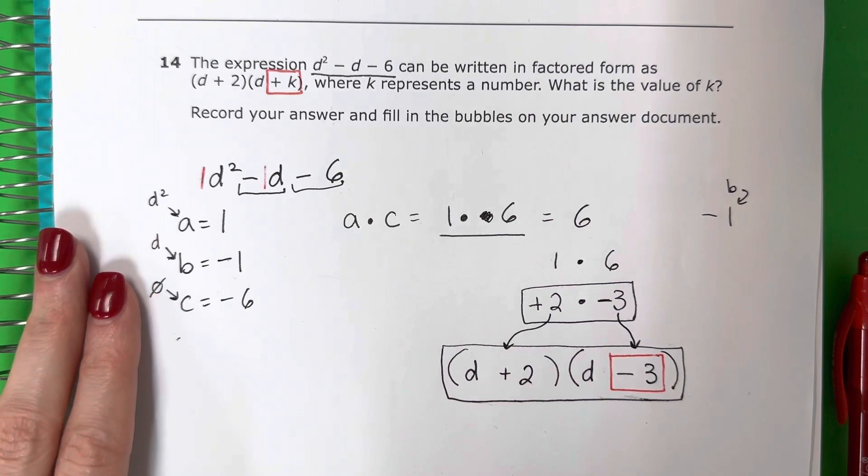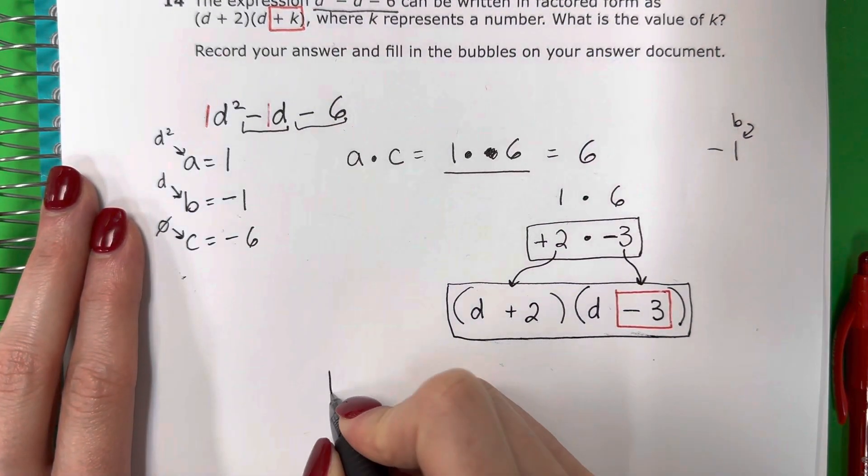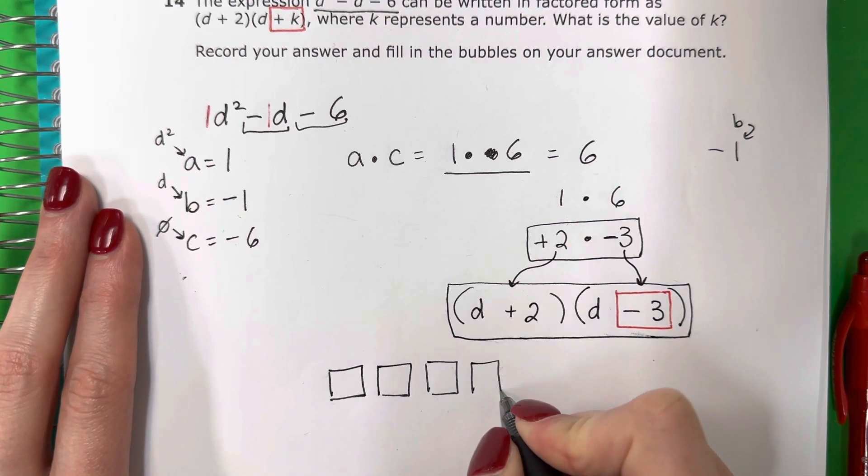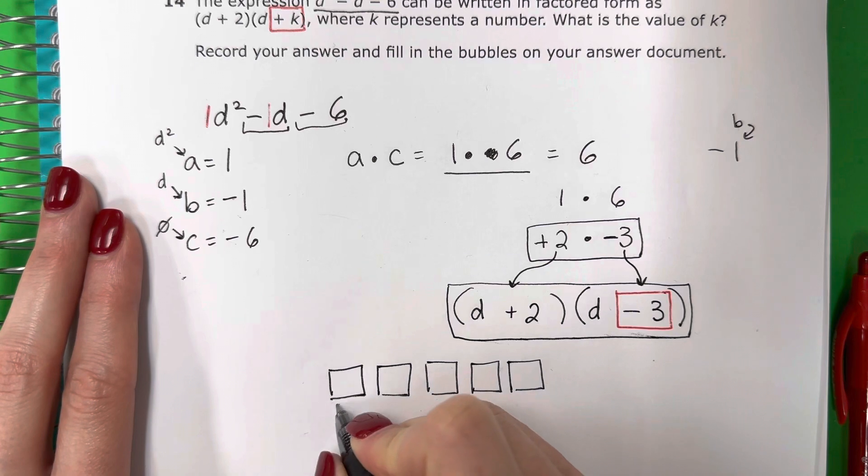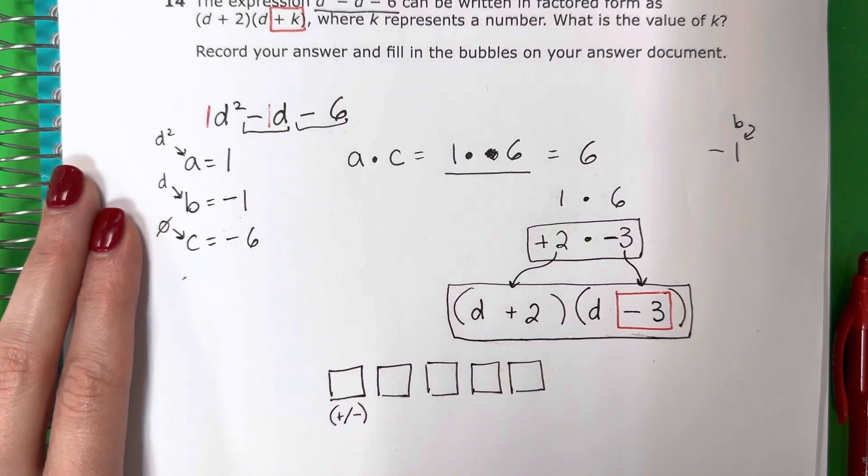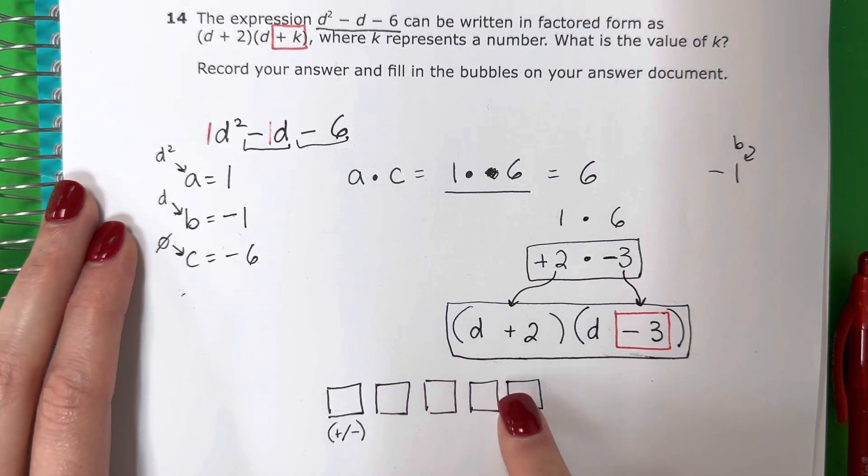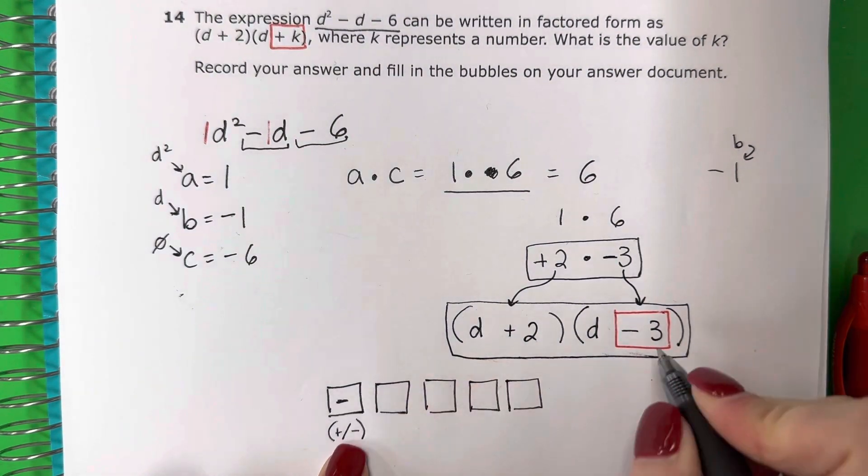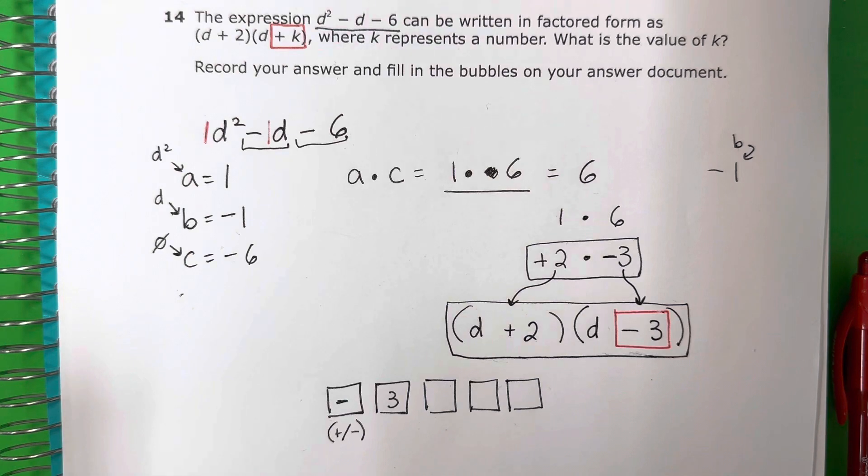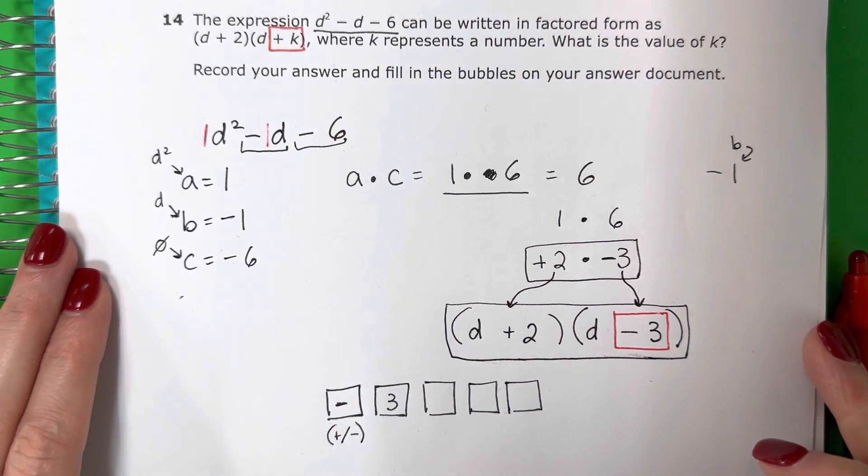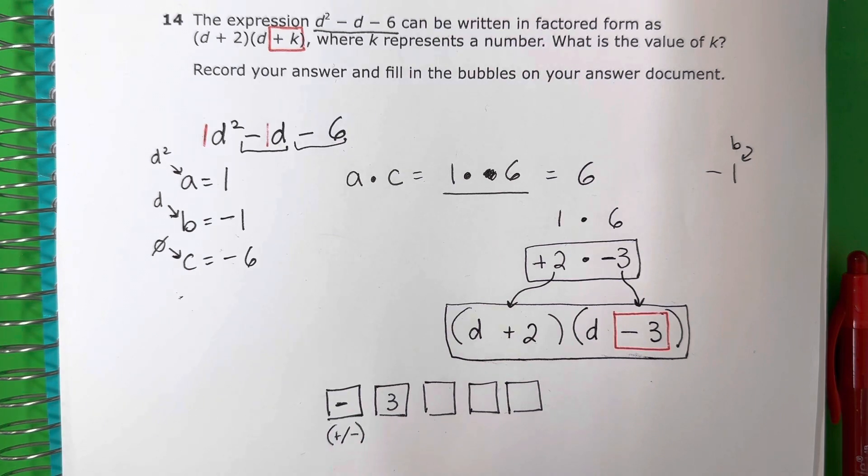So in this type of question, en este tipo de pregunta, on the test, in el examen, you're going to have some boxes. Van a tener cajas, cajitas así, like this. In the first box, en la primera caja, you will put only positive or negative. Solo van a poner positivo o negativo. And then numbers in the rest. Y números en el resto. So my first box, I will put negative, and then 3, and nothing else, y nada más. Okay, so just this, solo esto. Don't put zero or anything. No pon cero o nada. This would be how you present your answer on the test. Este es como pueden presentar su respuesta en el examen.